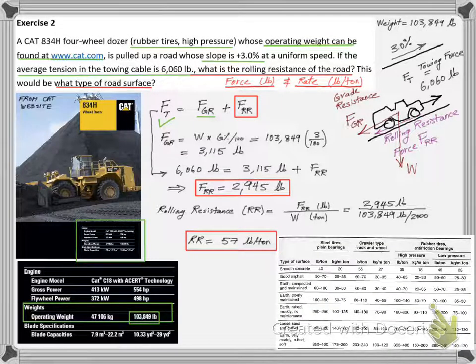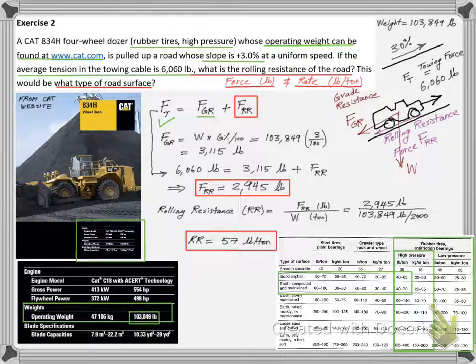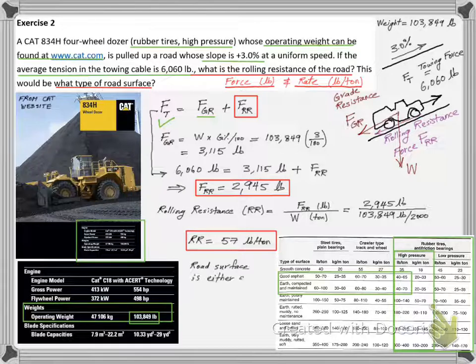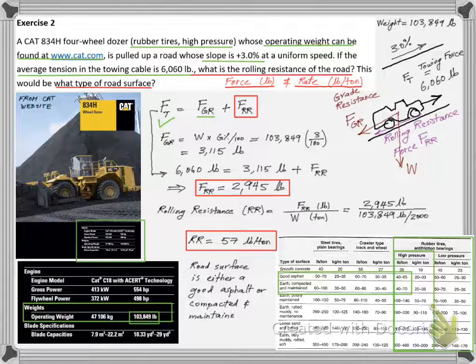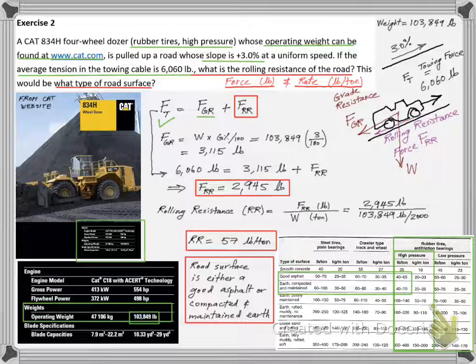We have seen this RR guidance table from the lecture. We can locate the table part relevant to this exercise by focusing on the high pressure rubber tire values. We can match the RR calculated and given values and conclude that the road is either good asphalt or compacted maintained earth.